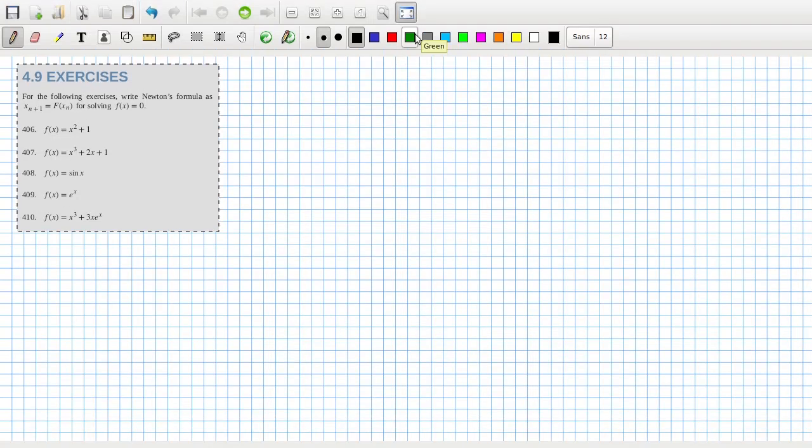Right, let's have a look here at the final exercise. Write Newton's formula for solving. Okay, so 406. The formula goes xn plus one equals xn minus f(xn) over f derivative at xn.